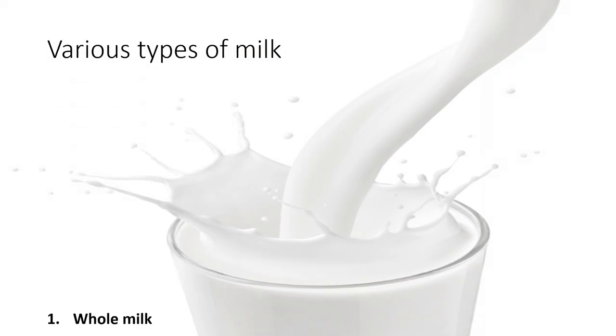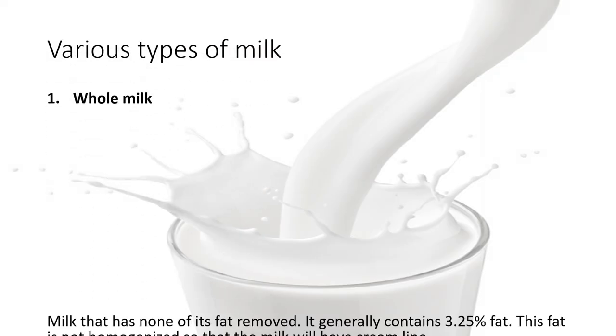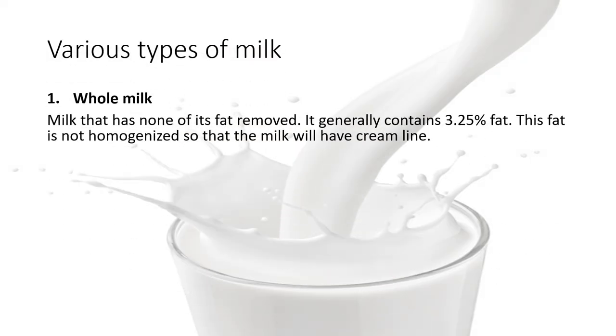Various types of milk. Whole milk: milk that has none of its fat removed. It generally contains 3.25% fat. This fat is not homogenized, so the milk will have a cream line.